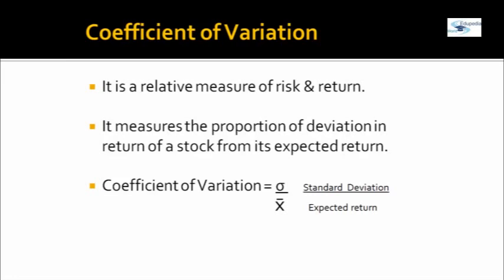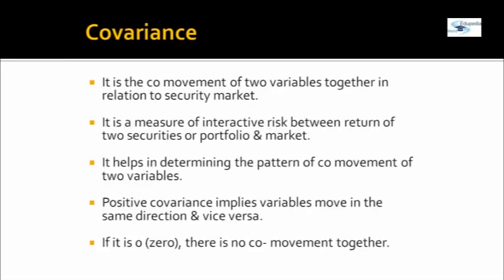Since both securities are equally risky, there is a better measure to evaluate riskiness — the relative measure of risk and return — called the coefficient of variation. Coefficient of variation measures the proportion of deviation in comparison to expected return. Since expected return and standard deviation are the same for both, the coefficient of variation is also the same. Coefficient of variation equals standard deviation divided by expected return. For security A, that is 6.32 divided by 20%.